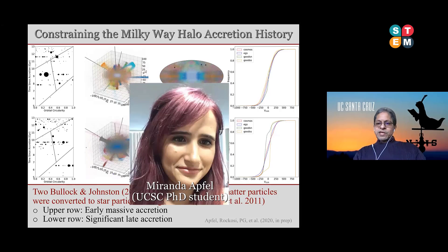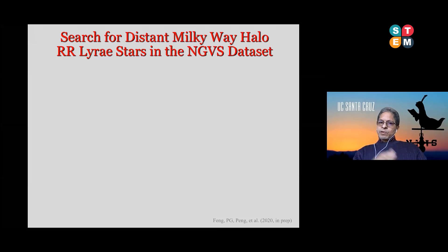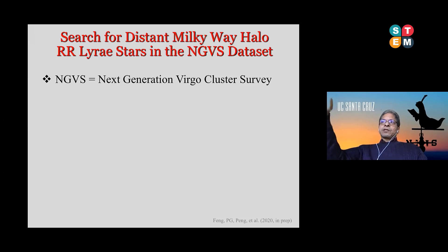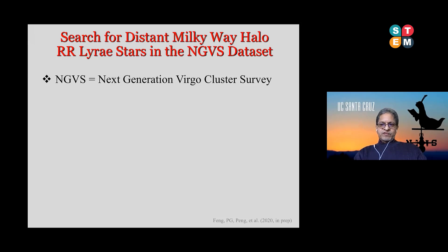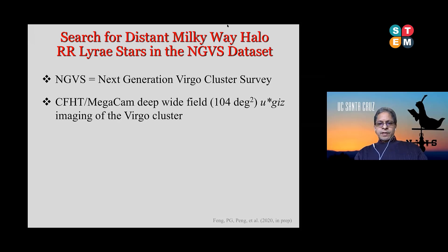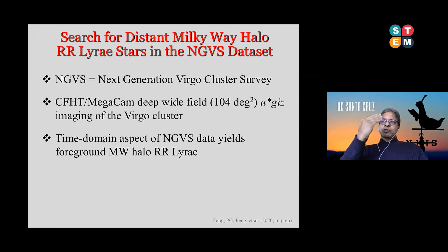One more thing about the Milky Way halo: from the Next Generation Virgo Cluster Survey (NGVCS), we searched for pulsating RR Lyrae stars. The NGVCS was designed to study galaxies in the Virgo cluster, but as a serendipitous angle, we can also measure stars in the Milky Way halo in the foreground. The 100-square-degree imaging survey in four filters (UGIZ, ultraviolet to near-infrared) includes repeat exposures giving us time-domain brightness measurements, which allowed us to search for pulsating halo RR Lyrae.